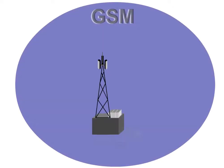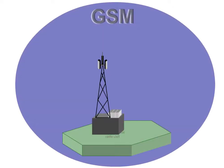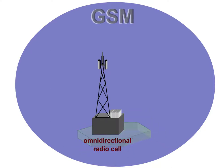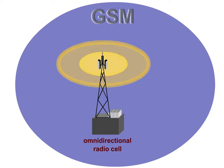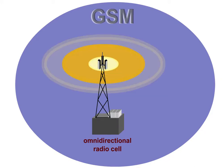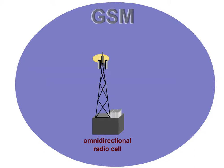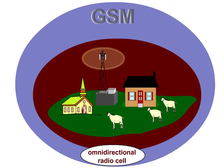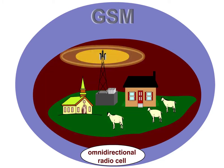If a BTS is in the centre of exactly one cell, we speak of an omnidirectional radio cell. The BTS transmits its frequencies with omnidirectional characteristics and a high output. Omnidirectional radio cells are used particularly in relatively sparsely populated rural areas.